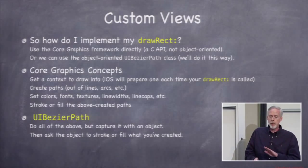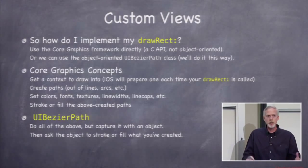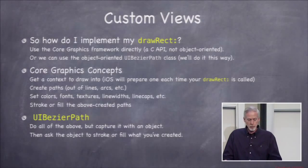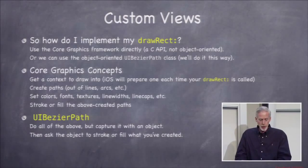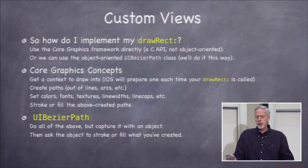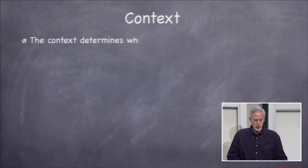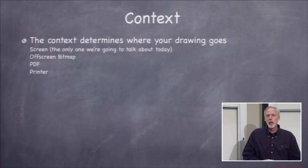UIBezierPath encapsulates all of that. It takes care of the context for you so you don't have to think about it. You create paths by sending messages to a UIBezierPath instance, it lets you set colors and line widths, and then it has methods to stroke and fill. So it encapsulates the entire Core Graphics mechanism.